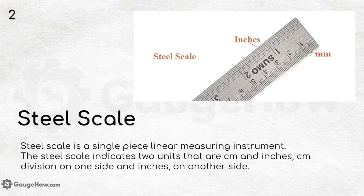Steel scale. A steel scale is a single piece linear measuring instrument. It indicates two units — CM and inches — with CM divisions on one side and inches on the other side.